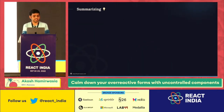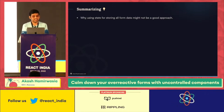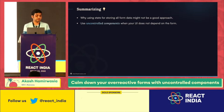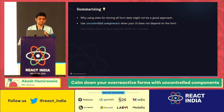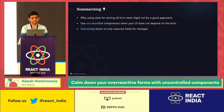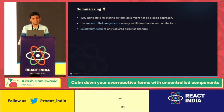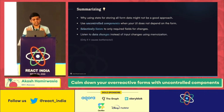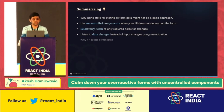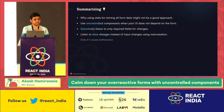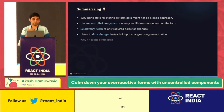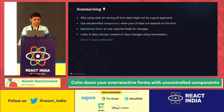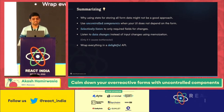With that, we have come to the end of this talk. Summarizing: we discussed why using state for storing all form data might not be a good approach, and how you can use uncontrolled components when your UI does not depend on the form values — which is the case for a lot of forms out there. If your UI does depend on input field values, you can selectively listen to only those fields. And if you still have a lot of re-renders, listen to data changes instead of just input changes, using memoization and comparison. Use this only if you have actual bottlenecks, because React is already fast and adding these checks might slow things down. Wrap everything in a delightful API that is fun to use.